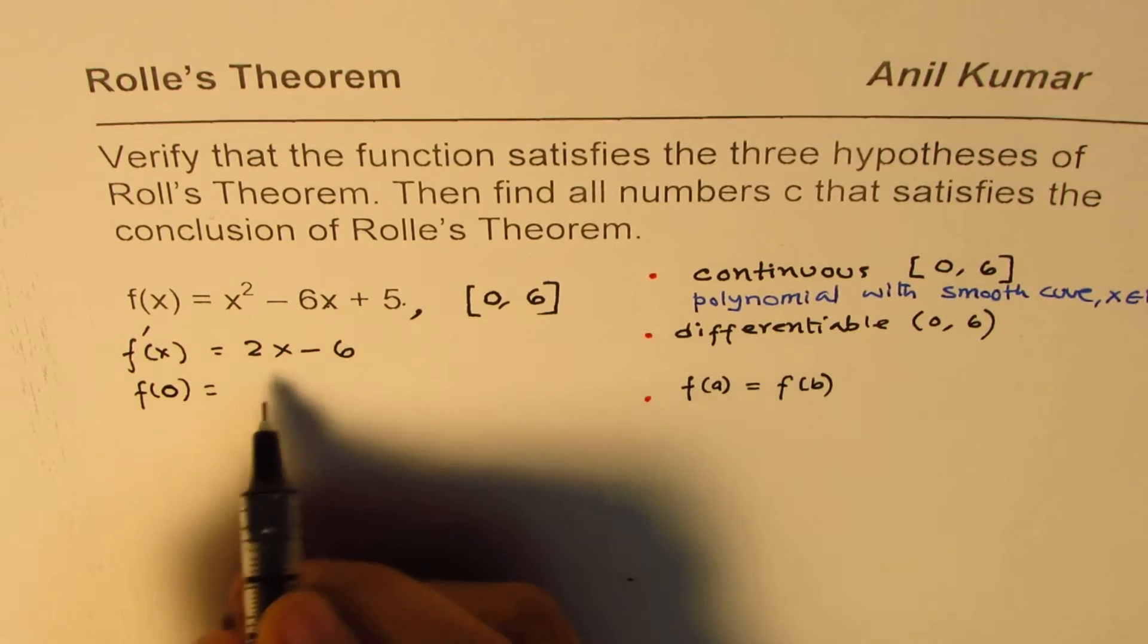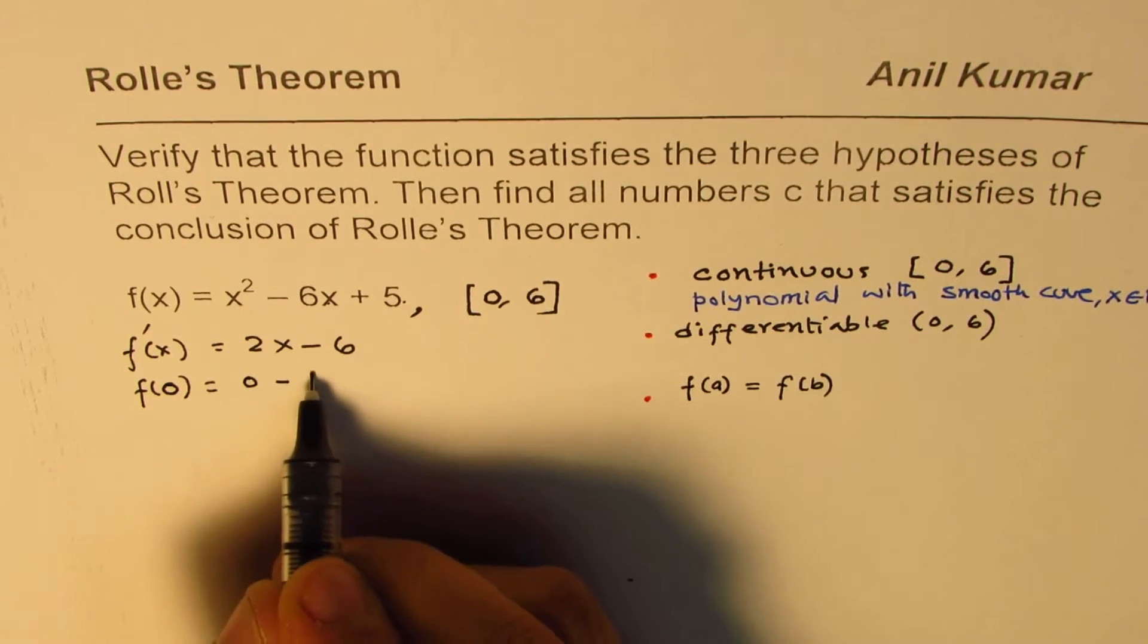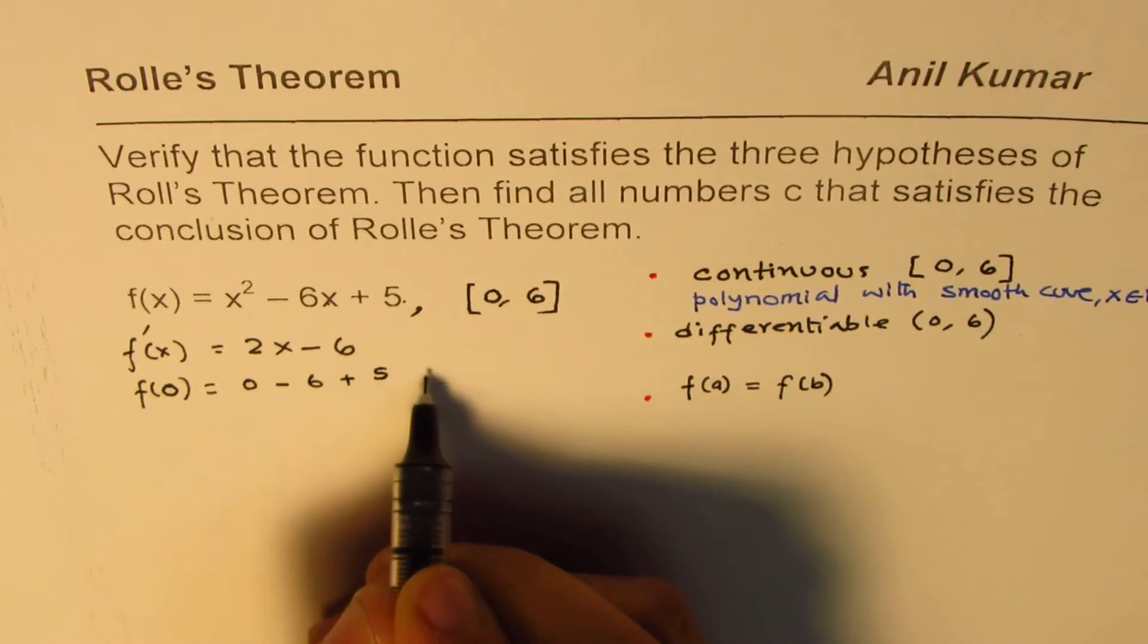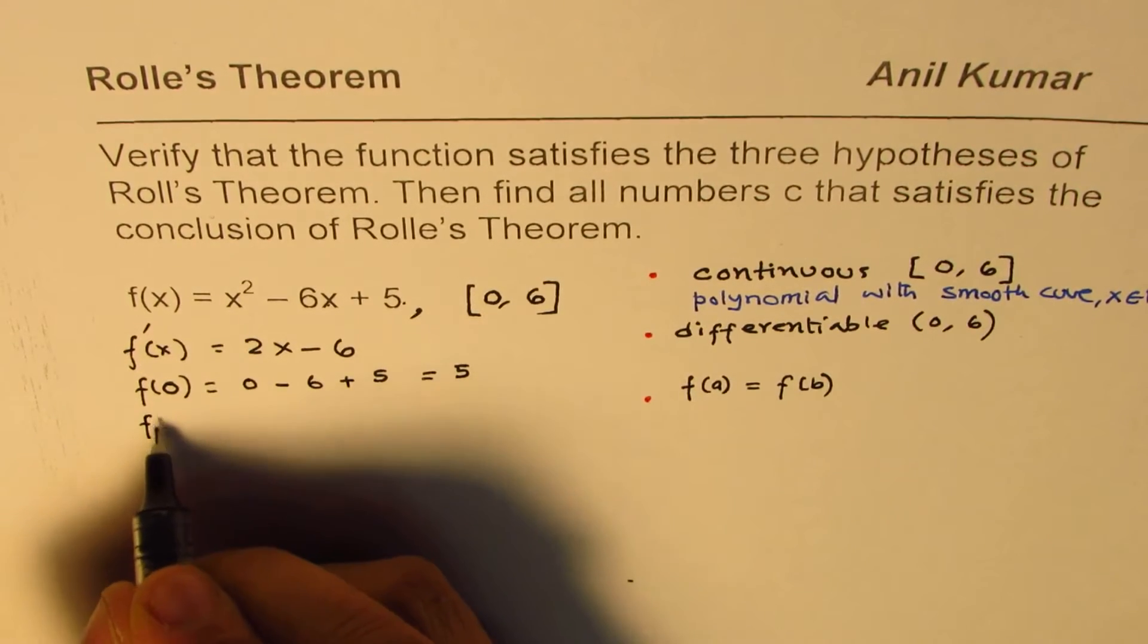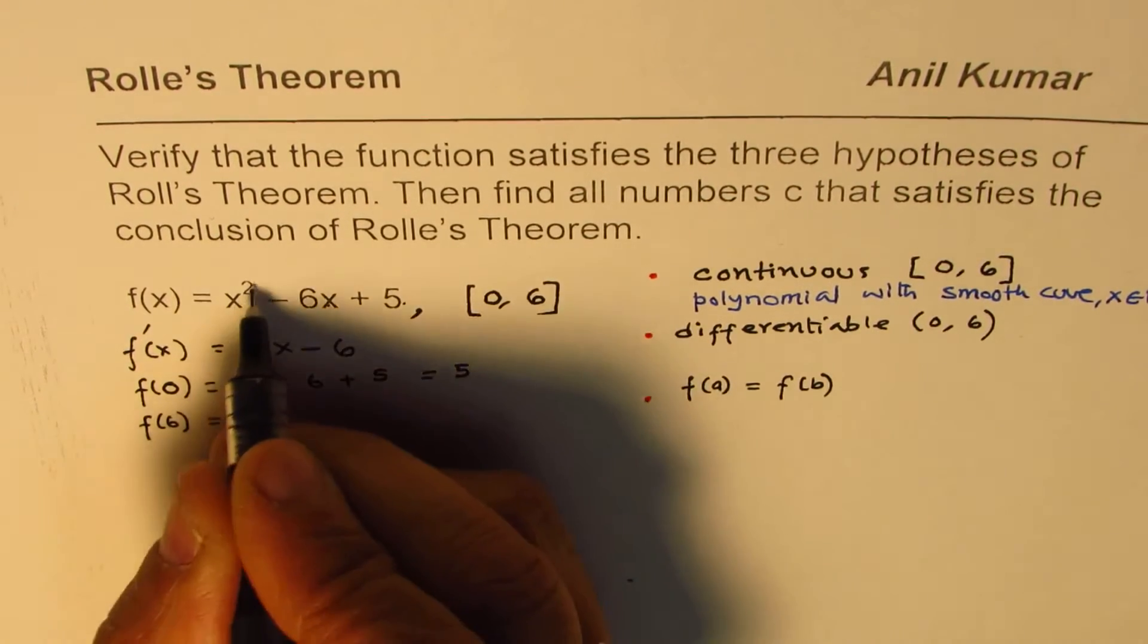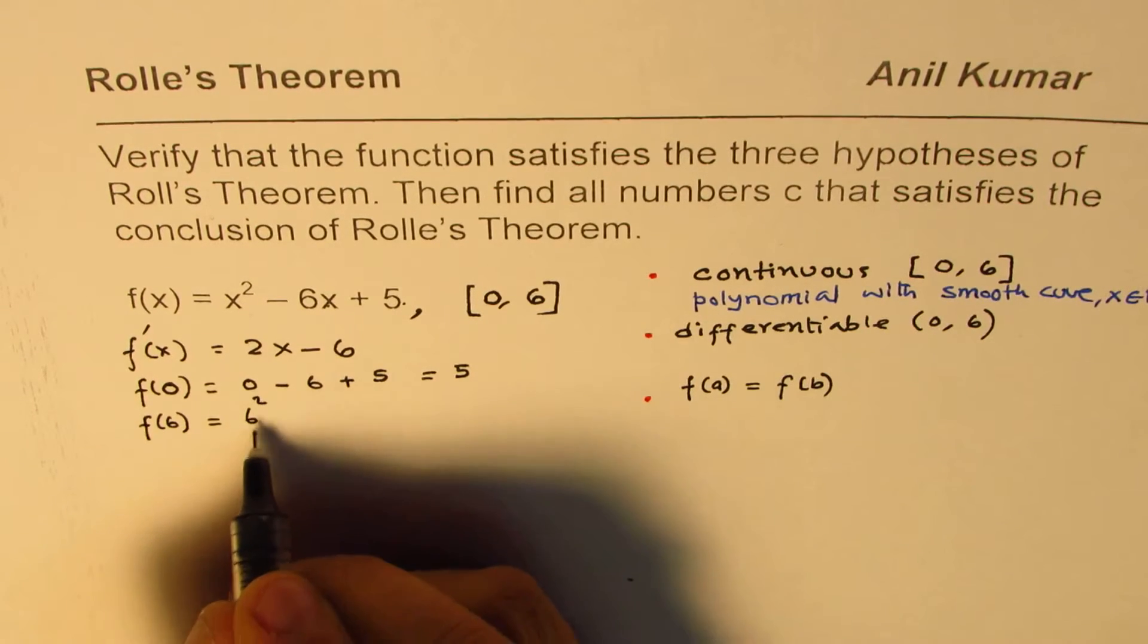This is 0 - 0 + 5, which is 5. And if I substitute 6 here, I get 6², which is 36...